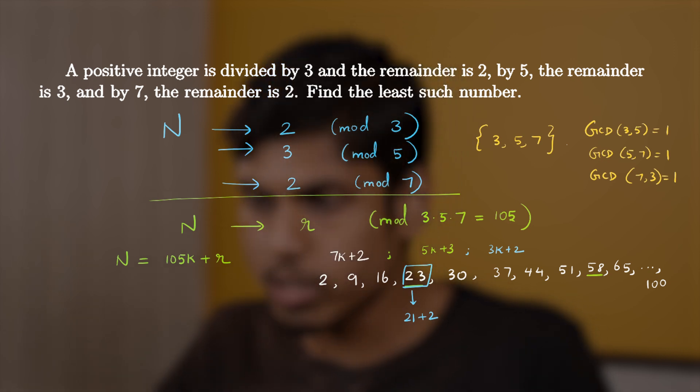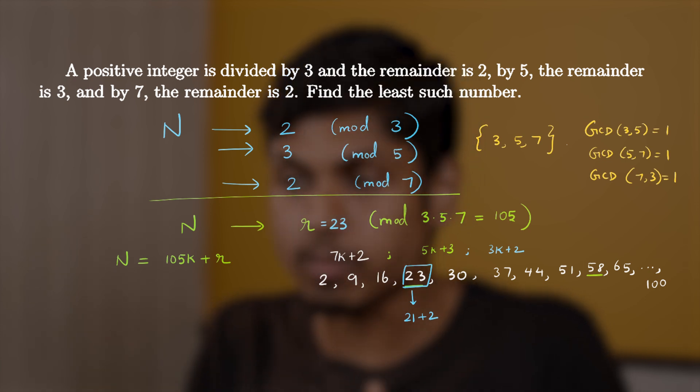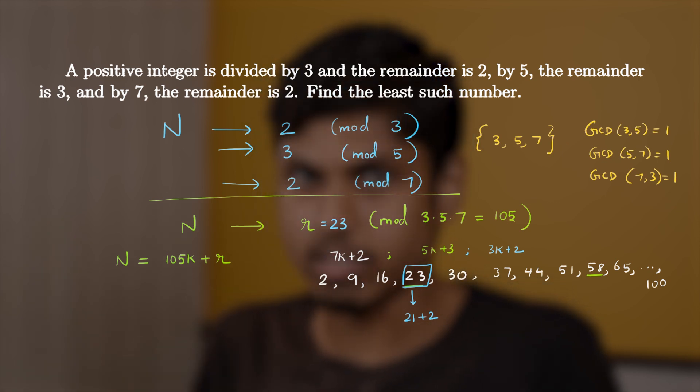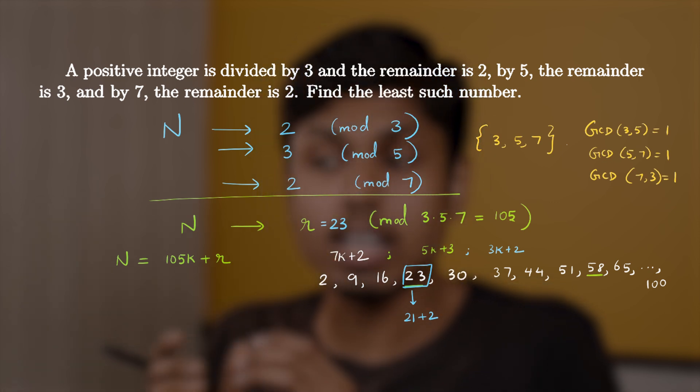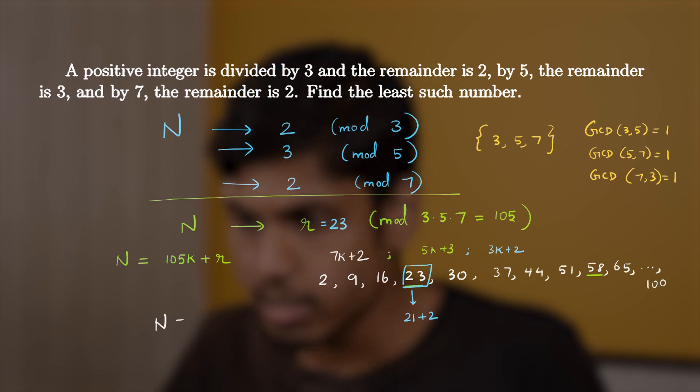And hence r equals 23. That's it. There is no further question that you have to ponder about. And you can conclude that 23 mod 105 is the definite result, because the Chinese remainder theorem states that there are no other solution mod 105. So even if you think about the other numbers, you will not be able to deduce any.